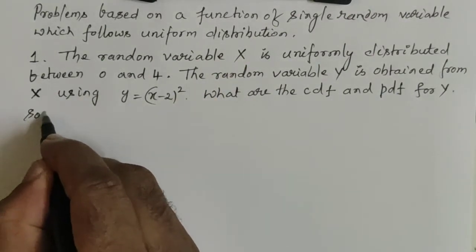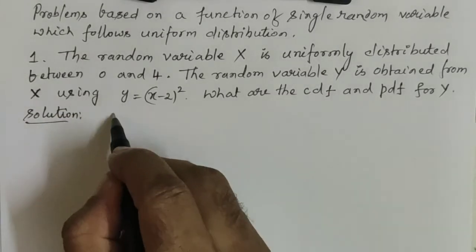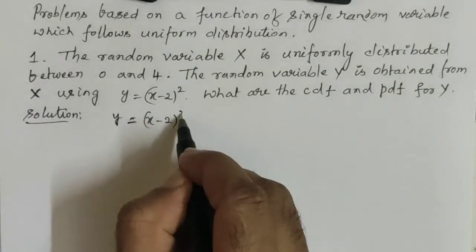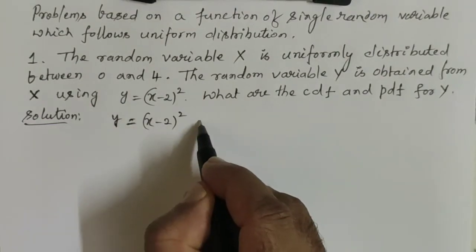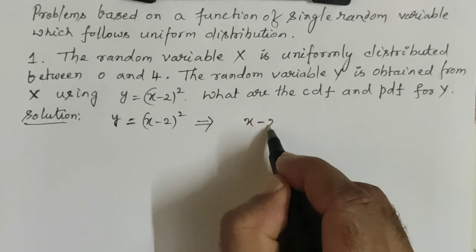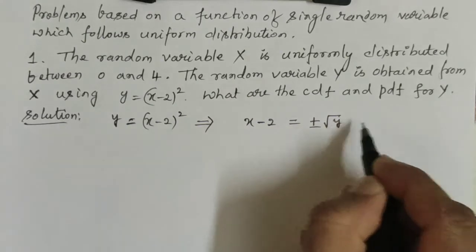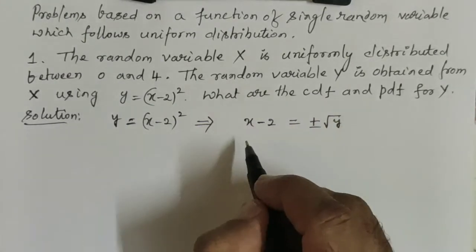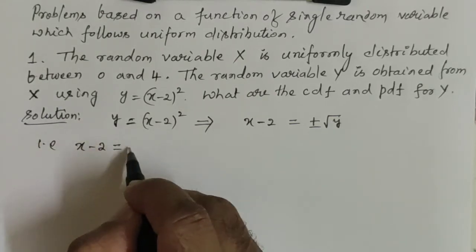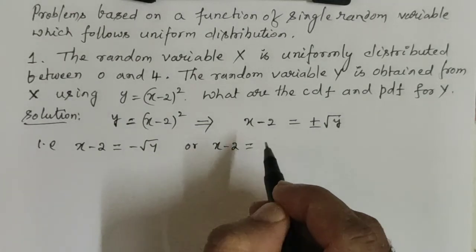So the solution: Y = (X - 2)², this is a parabola. This implies X - 2 = ±√Y, that means X - 2 = -√Y or X - 2 = +√Y.